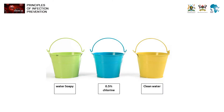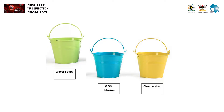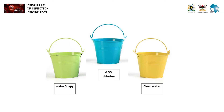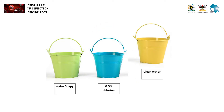The three-bucket system is used to decontaminate medical instruments that come from use in the patient area, whether soiled or not, to remove organic matter. In the first bucket, we have soap and water, in which the medical instruments are soaked and washed to remove visible organic matter. In the second bucket, we have 0.5% chlorine, in which the instruments are soaked for 10 minutes. In the third bucket, we have clean water, in which the instruments are rinsed before being thoroughly dried and taken for sterilization.